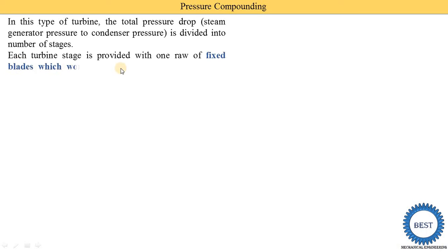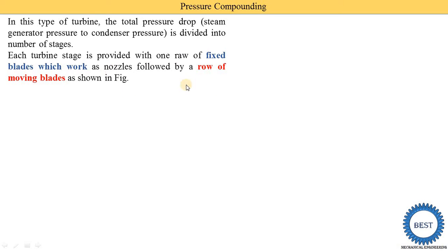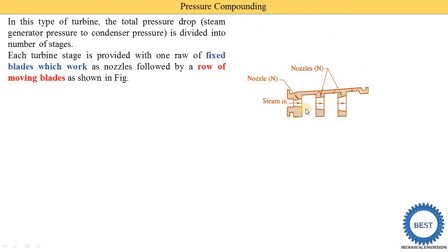Each turbine stage is provided with one row of fixed blades which work as a nozzle, followed by a row of moving blades as shown in this figure. The steam first enters the nozzle, then passes through the moving blade, then another nozzle, then moving blades again, and so on. The nozzles are mounted in the casing, which is the outer part of the turbine. The fixed blades come out with the casing when removed — that's why they are called fixed blades.